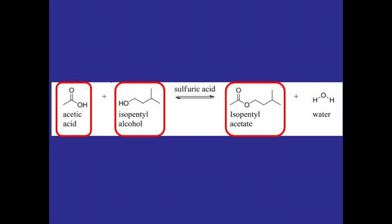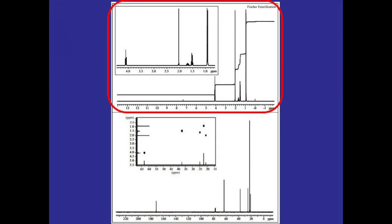On each spectrum, the top half is the proton NMR for the compound and the bottom half is the carbon NMR for that same compound.